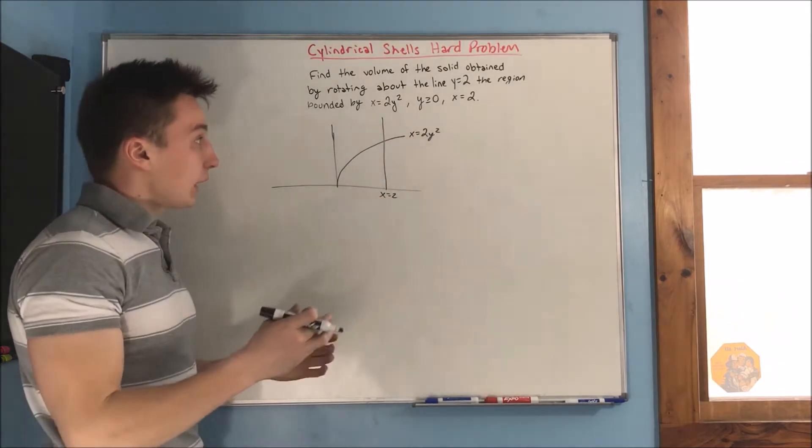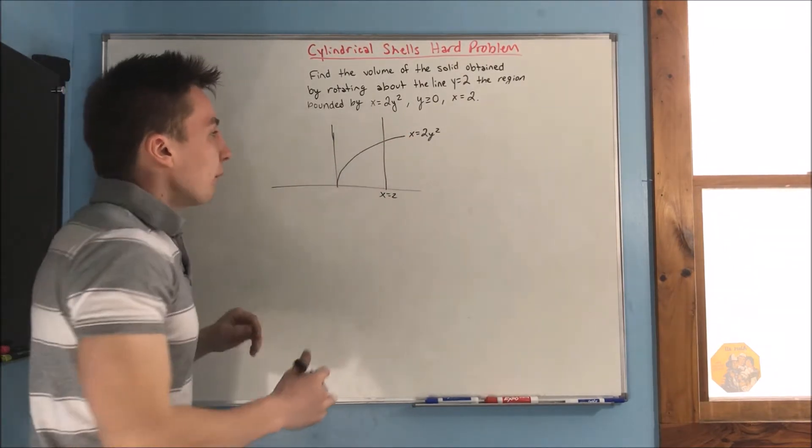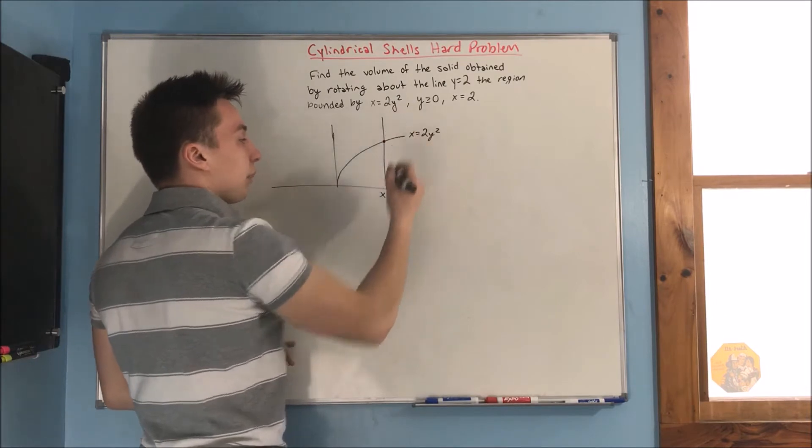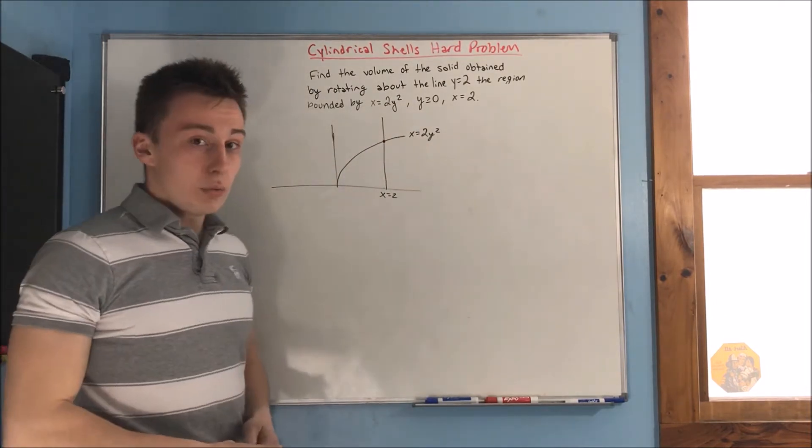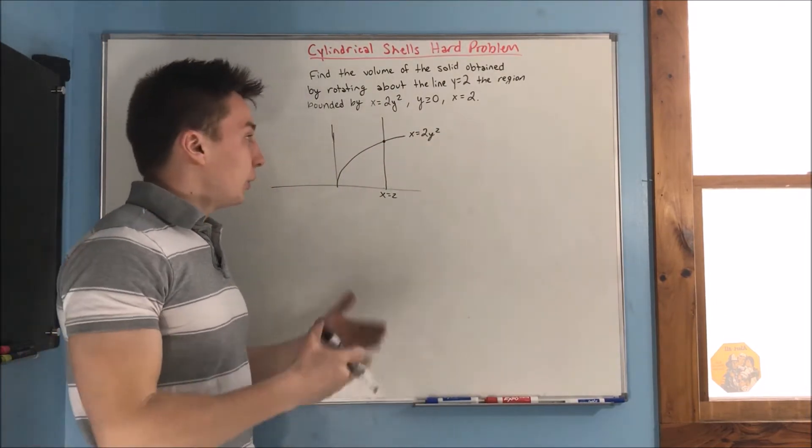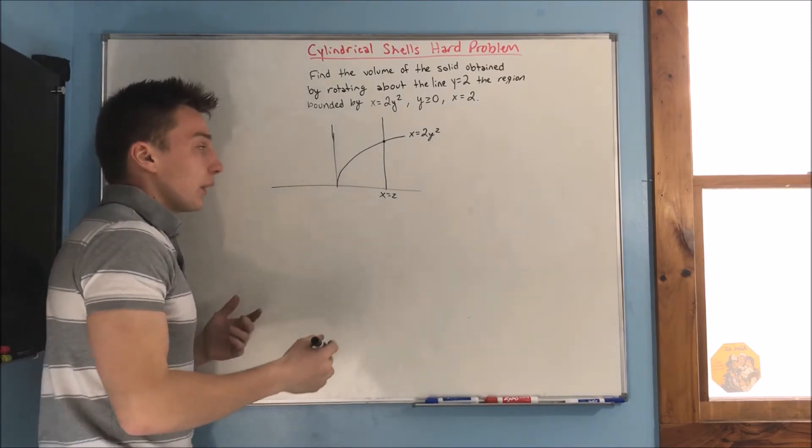Now, I don't know where that line is going to be, because I don't know where x equals 2y squared is meeting up with x equals 2. Okay? And a great way to figure out what that's going to be,